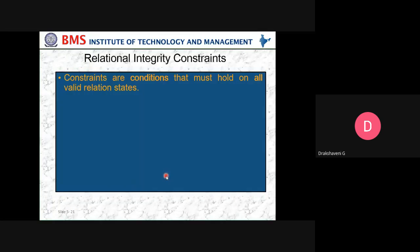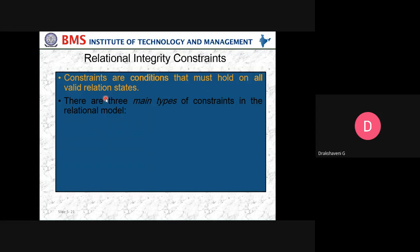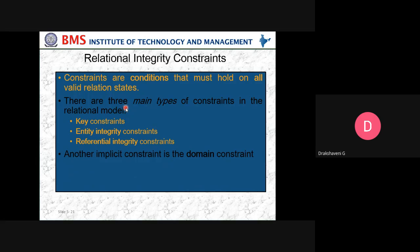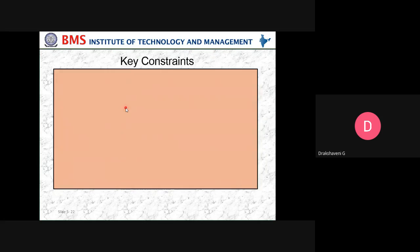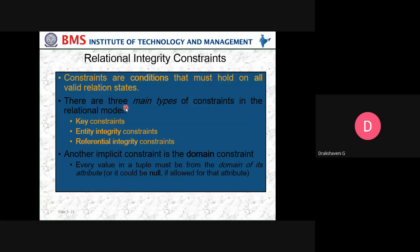Integrity constraints are conditions that must hold on all valid relation states. Whatever constraint exists must be applied to every row in the table — not just one row. There are three main types of constraints in the relational model: key constraint, entity integrity constraint, and referential integrity constraint. Another implicit constraint is the domain constraint: every value in a tuple must be from the domain of its attribute.